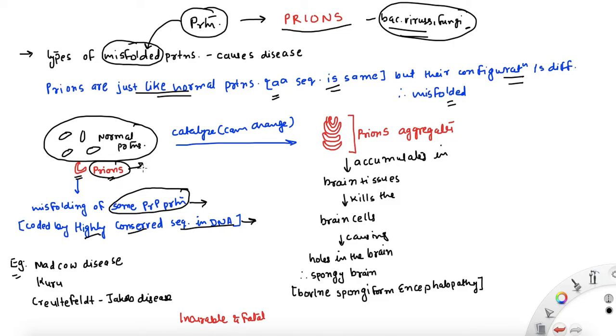Now the worst part is, it's not only that it's misfolded. This one misfolded prion can actually trigger or catalyze this normal protein also to become prions. It can trigger or catalyze the normal protein to turn into prions, so it will change the shape of the normal protein also.